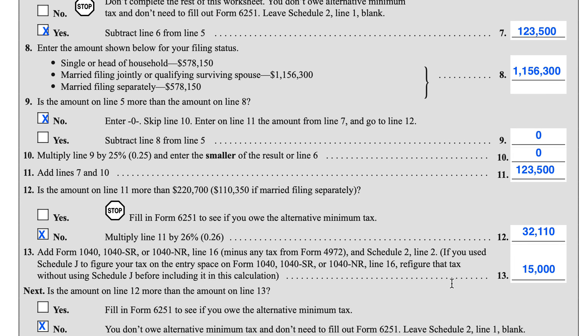For Line 13, we're going to add a couple of things. We're going to add the Line 16 number from your Form 1040, 1040-SR, or 1040-NR — that Line 16 is the tax. However, we're going to back out the tax reported on IRS Form 4972, which is the tax on lump sum distributions. That's check mark number 2 on Line 16, where there are specific check marks for different tax forms. So we're going to back that out of our tax.